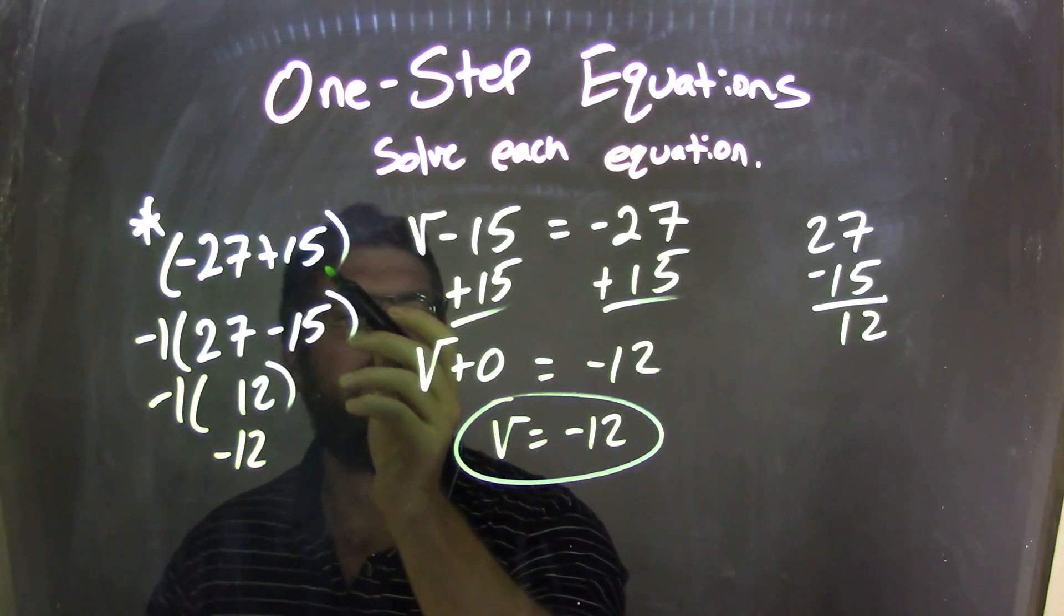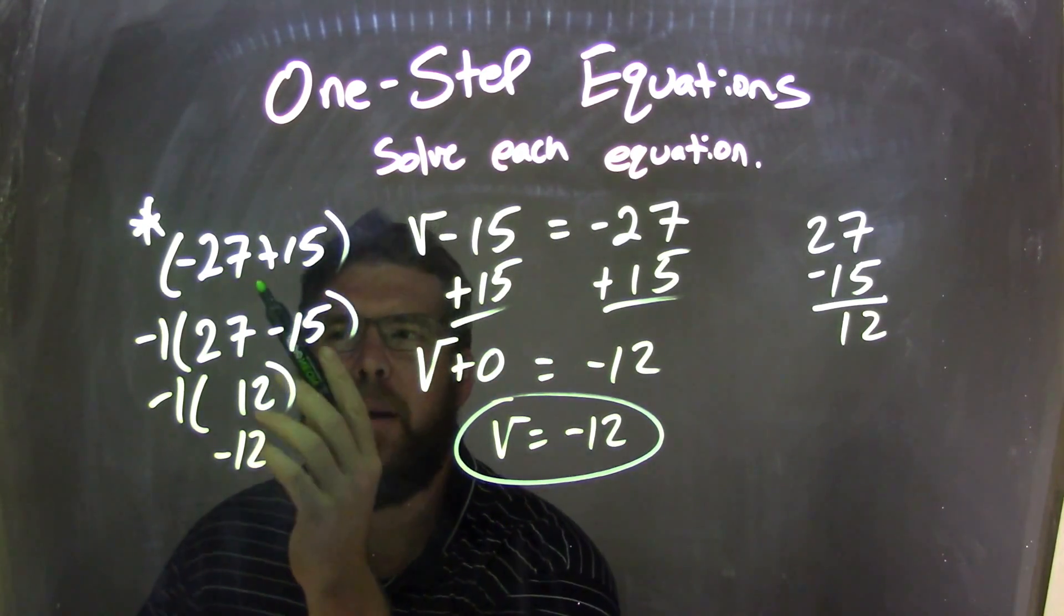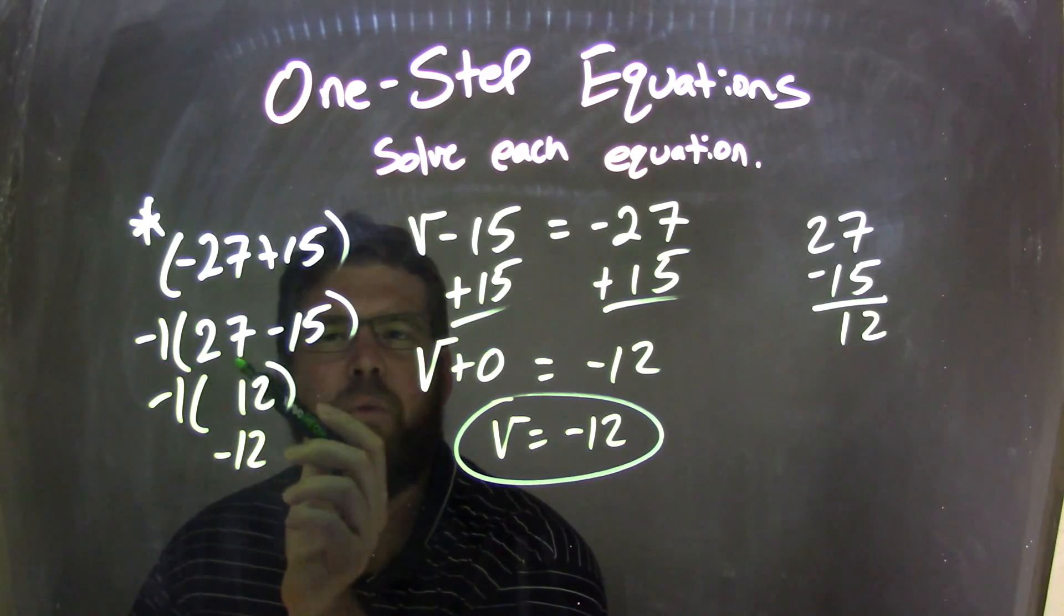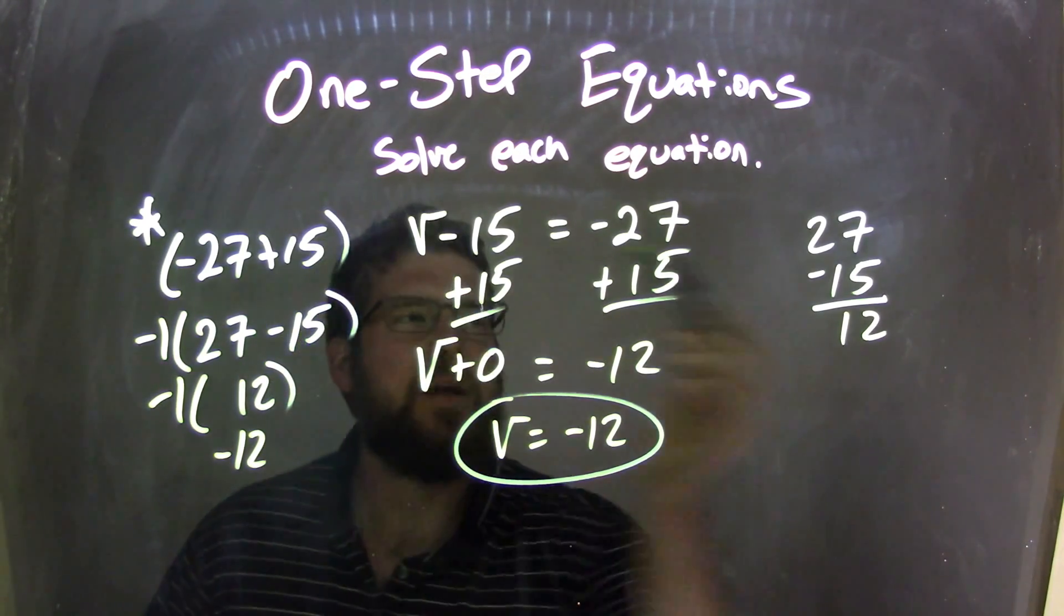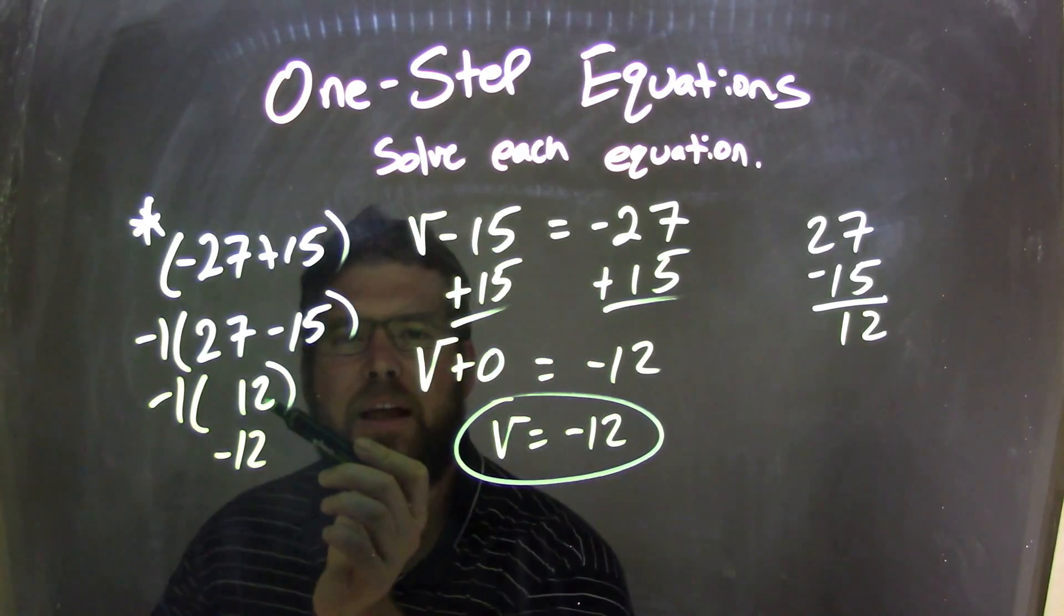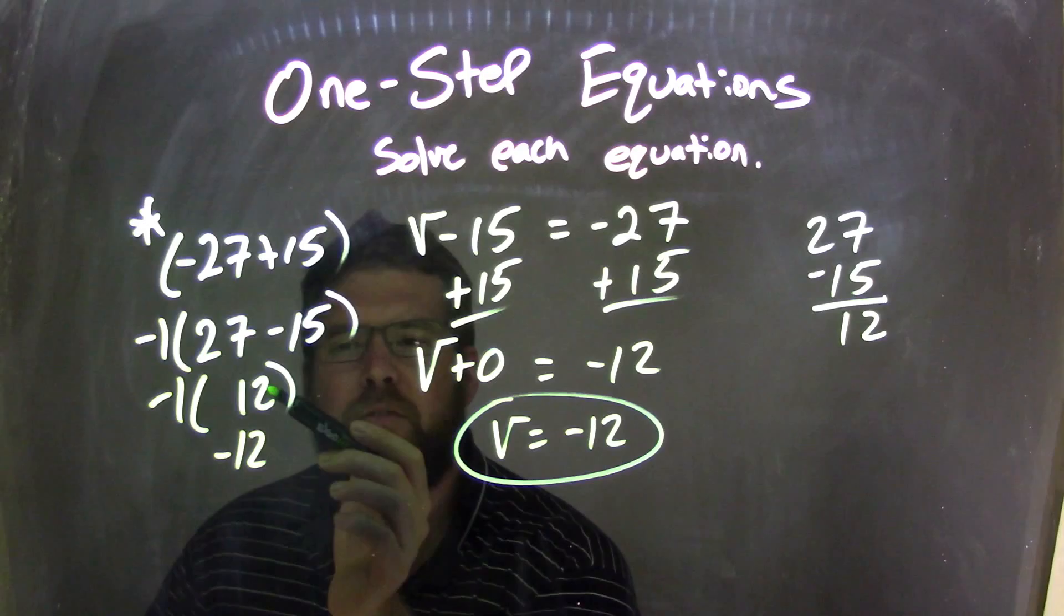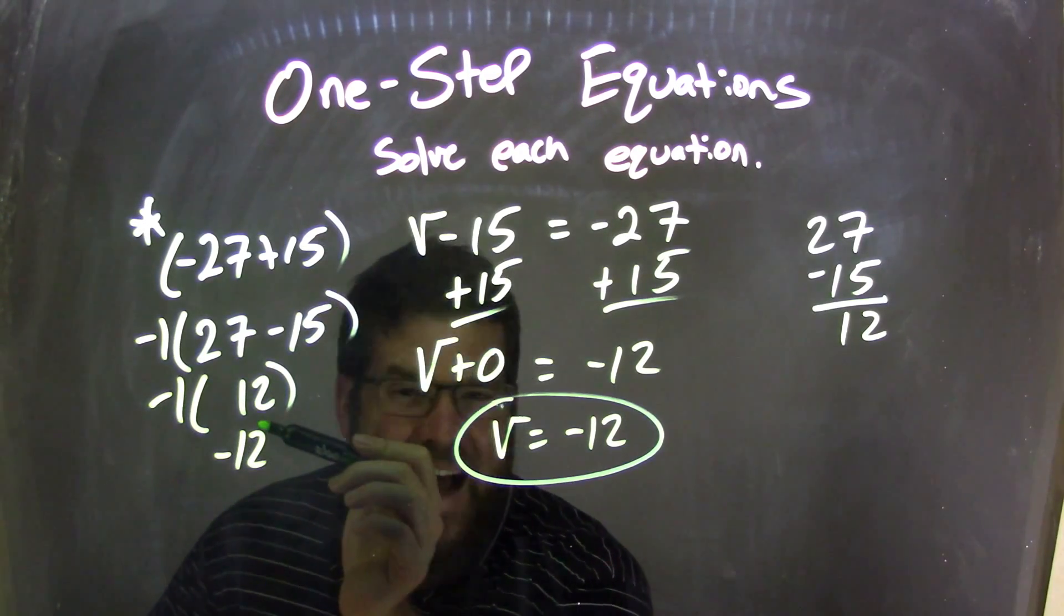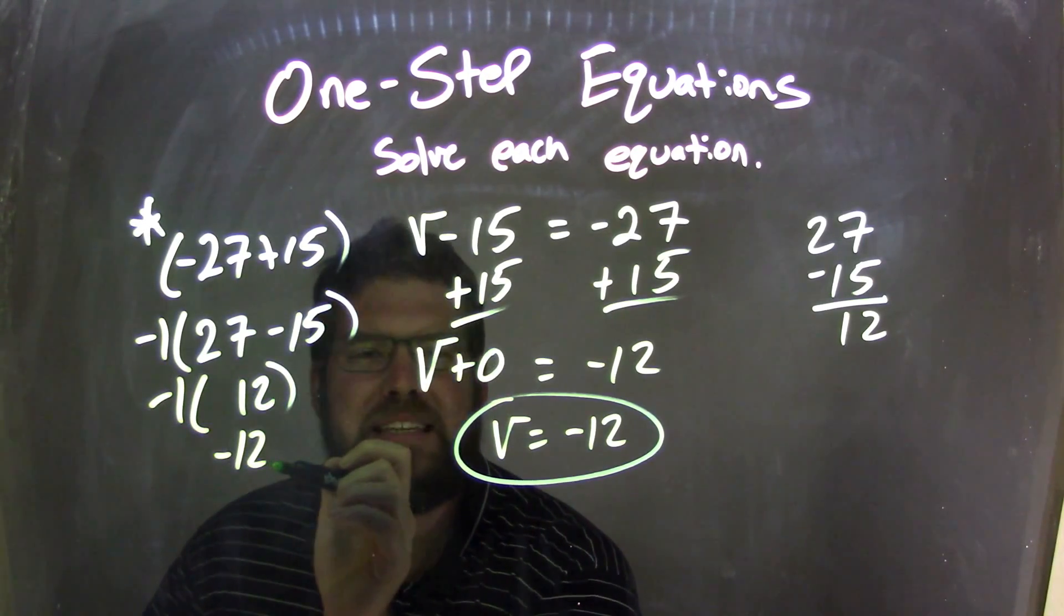So I thought to myself, well, negative 27 plus 15, isn't that the same thing? If I pull out a negative 1 to be negative 1 times 27 minus 15, and 27 minus 15 was pretty easy to do, that's 12. So that became here, that 12. Negative 1 times 12. Well, negative 1, I'll put that negative 1 back in, and negative 1 times 12 is a negative 12.